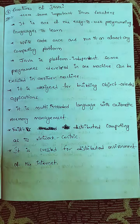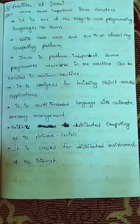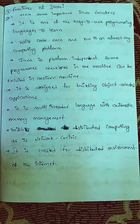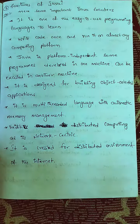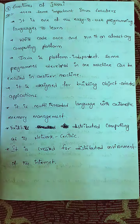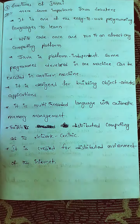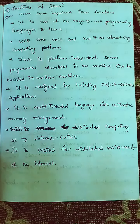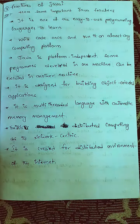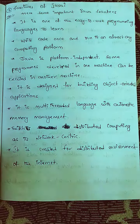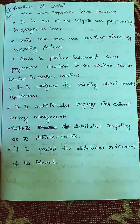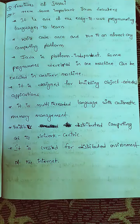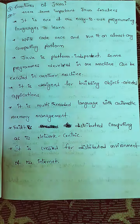Number 2: you can write code and run it on almost any computing platform. Java is platform independent — programs developed on one machine can be executed on another machine.